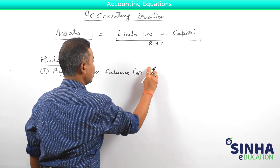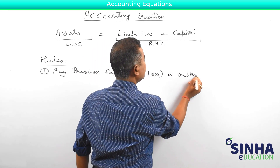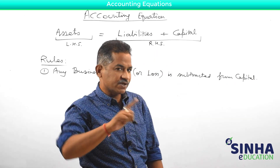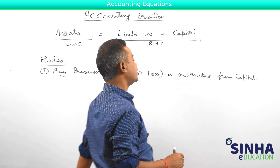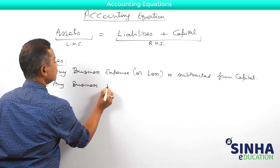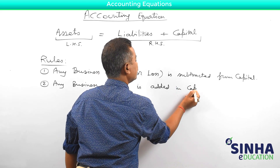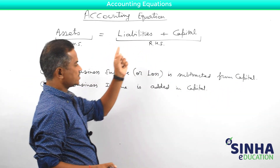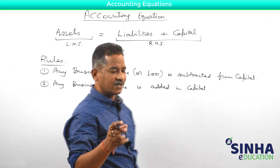Rule one: any business expense or loss — even loss — is subtracted from capital. Capital means the proprietor's fund. Any business expense or any loss suffered by the business must be subtracted from the proprietor's fund. Rule two, just the opposite: any business income is added to the proprietor's fund, which means capital.